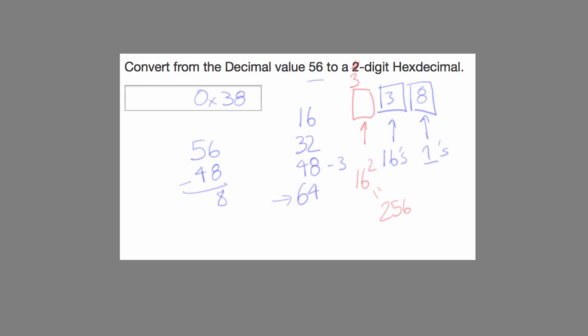Similarly, if we continue on, the fourth digit would be the 16 cubed place and so on and so forth. And so we could use the same strategy for numbers that are over 256. We know that there's at least a one in the 16 squared or 256th place.